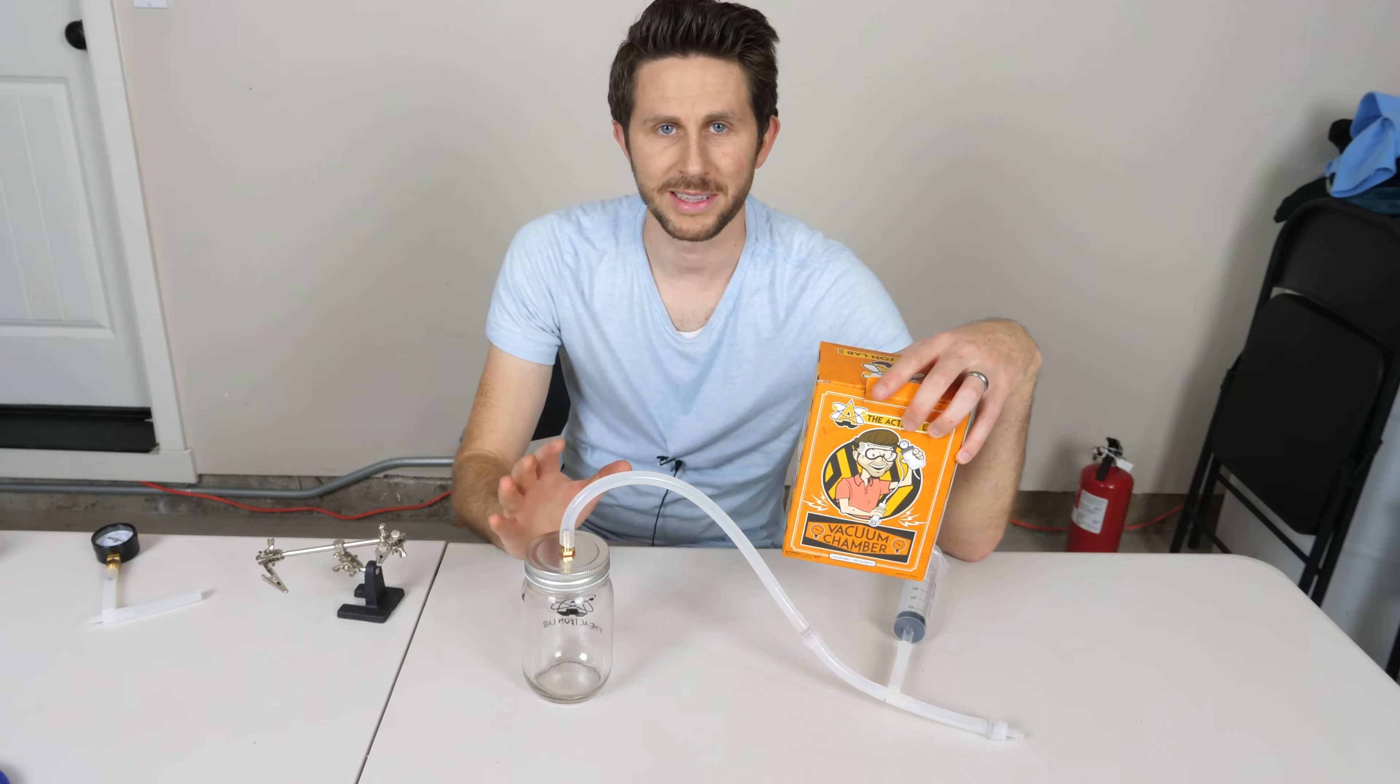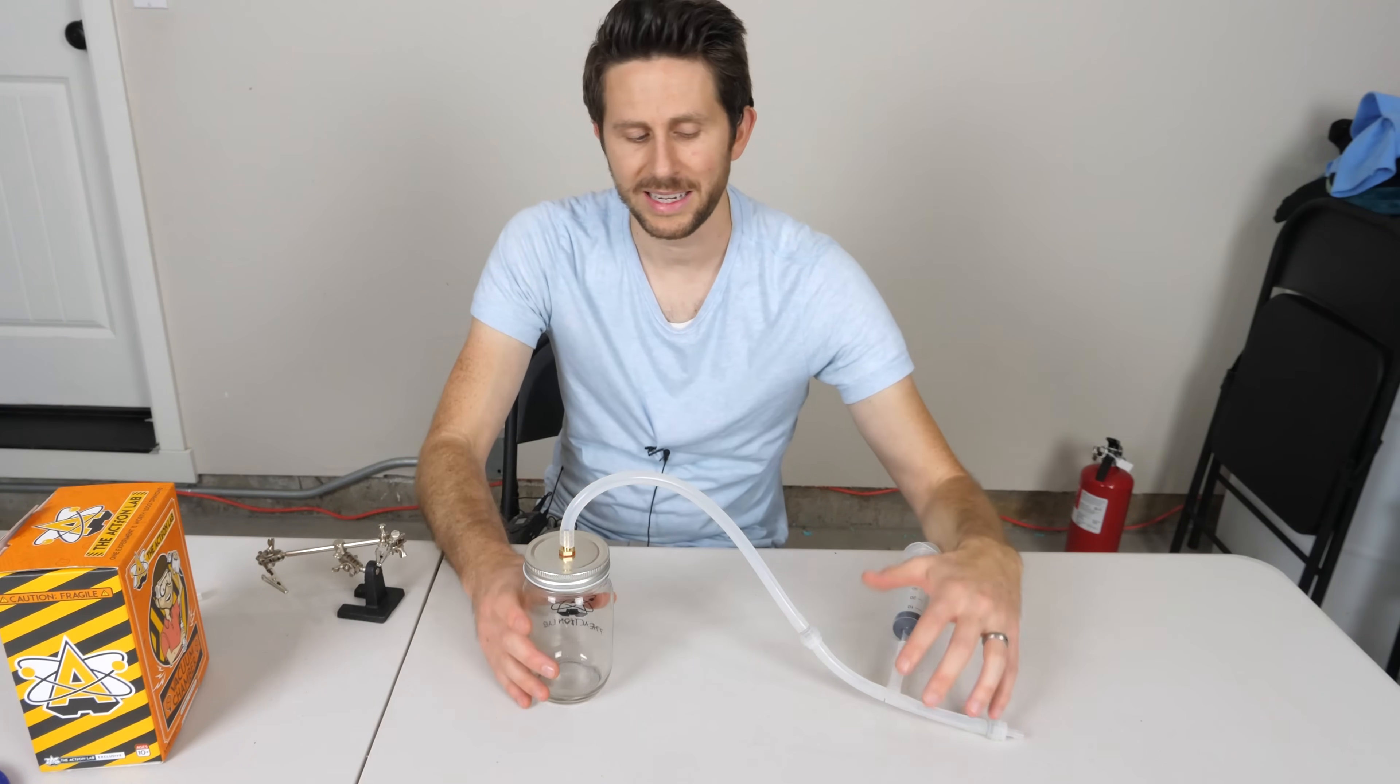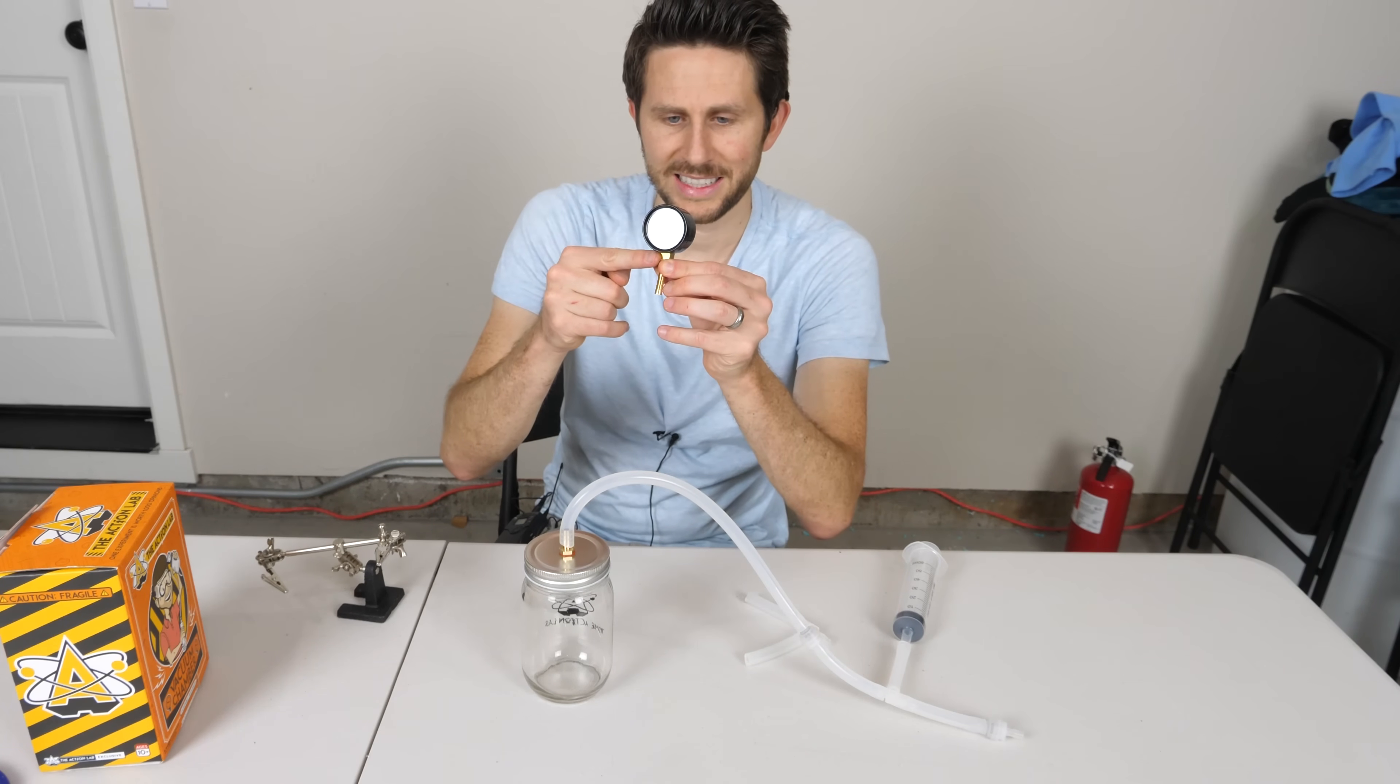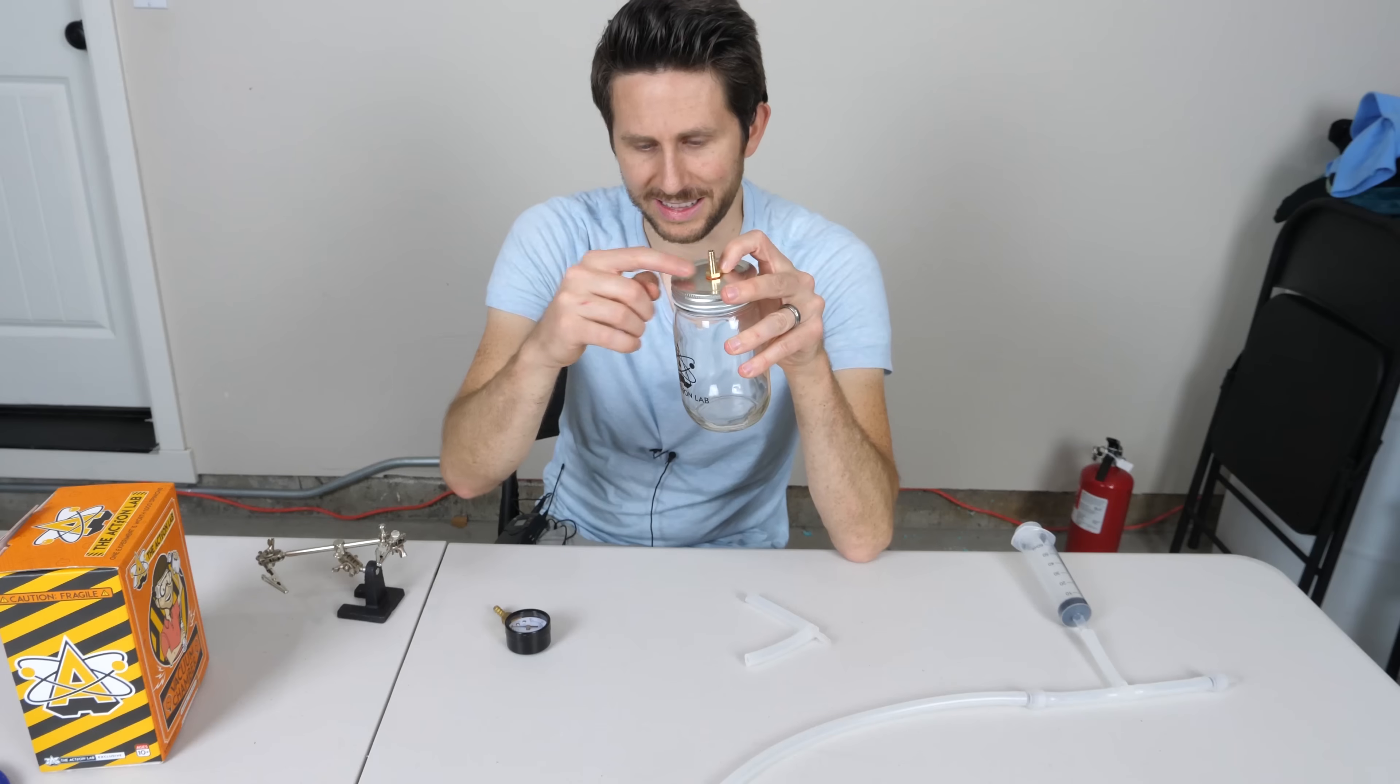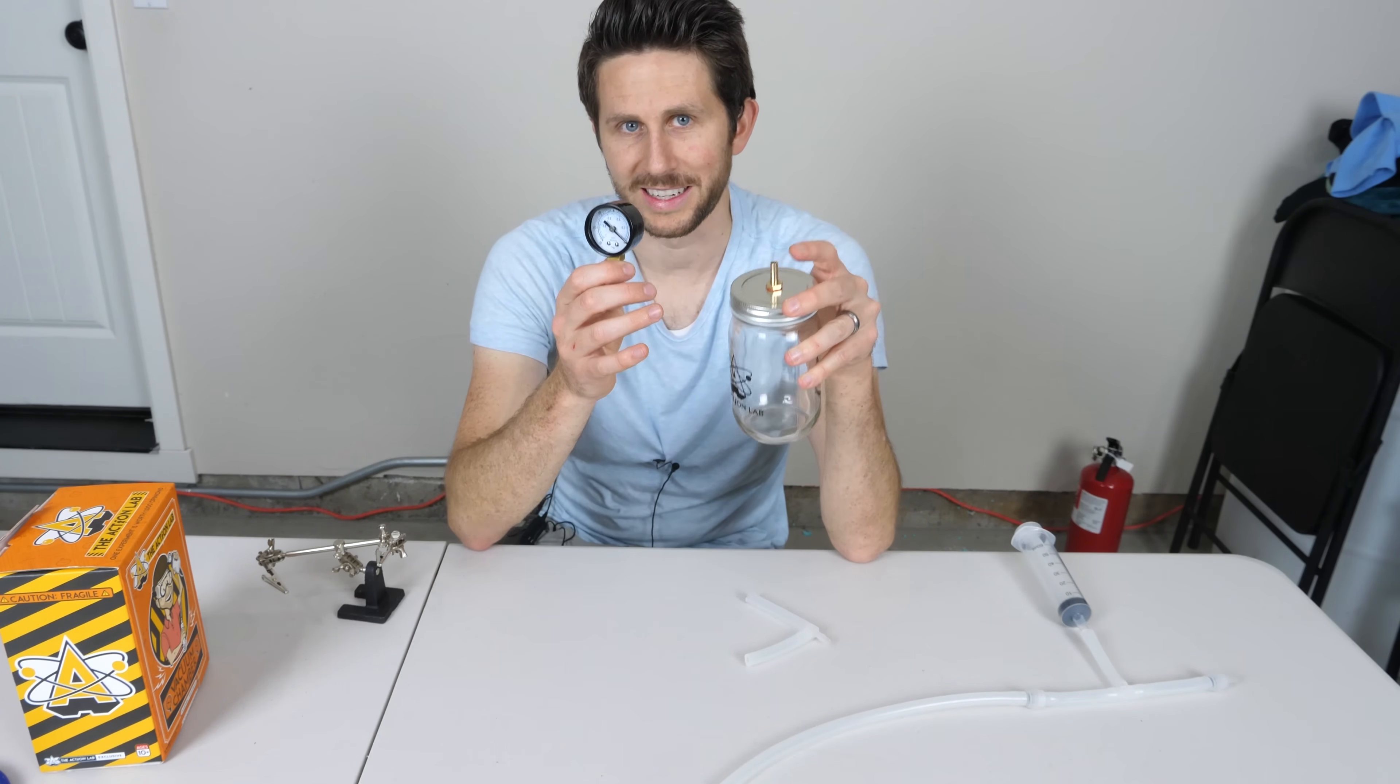I hope this video helped you be able to put this together a little bit easier. Like I said, it's a pretty easy assembly. The main thing is getting this connection a good seal and this connection a good seal. Once you can get this O-ring sealed and this sealed, then your vacuum chamber should work just fine.